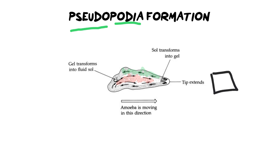Let's say I want to move towards this box that I've drawn here. What happens is I need to create a pseudopodia — a false foot — and to do that we need to change the consistency of our cytoplasm so that we can move. Step one: the gel is turning into a sol, in other words a liquid. The jelly-like layer on the outside gets a little more runny and it runs down the middle — it's more liquidy.